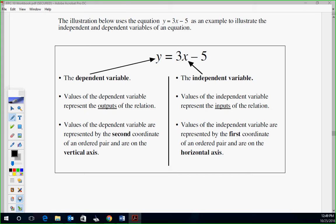This section, this is the dependent. Values of the dependent variable represent the outputs from the relation. So outputs. Think dependent outputs. And values of the dependent variable are represented by the second coordinate in ordered pair on the vertical axis. So it is this coordinate, the second coordinate. X is the independent variable. The values of the independent variable represent the inputs of the relation. It is this guy here, first coordinate in an ordered pair.